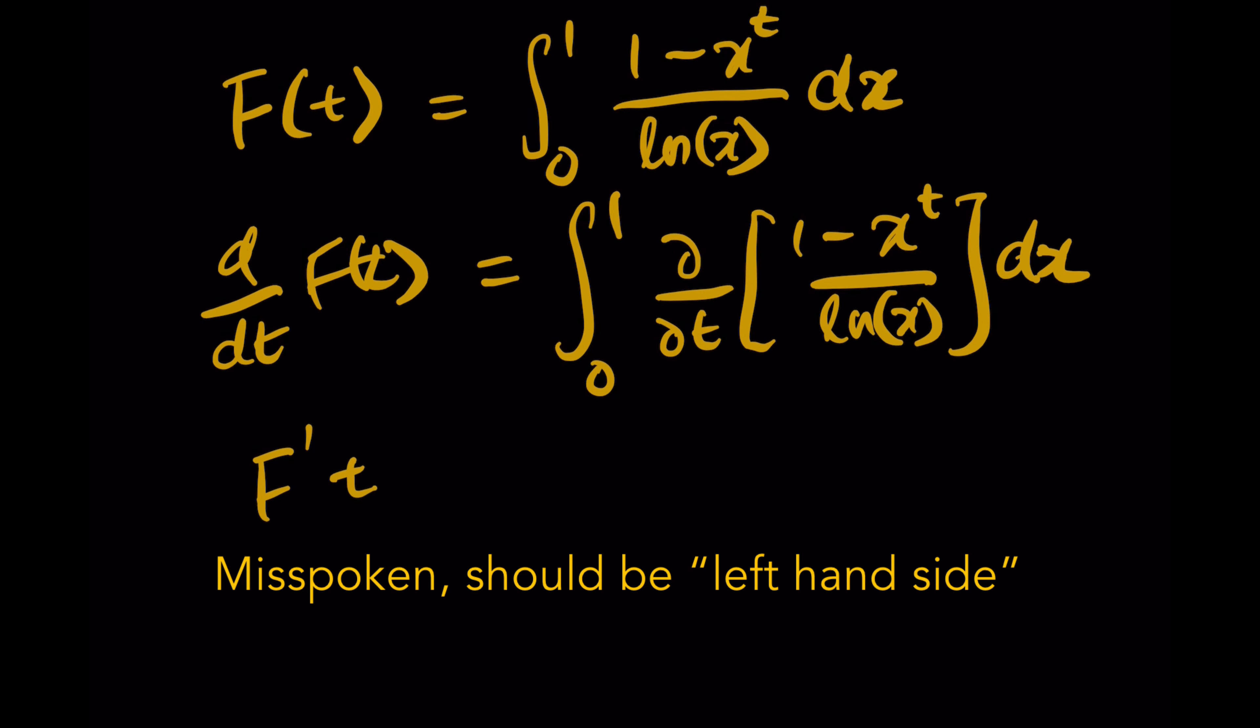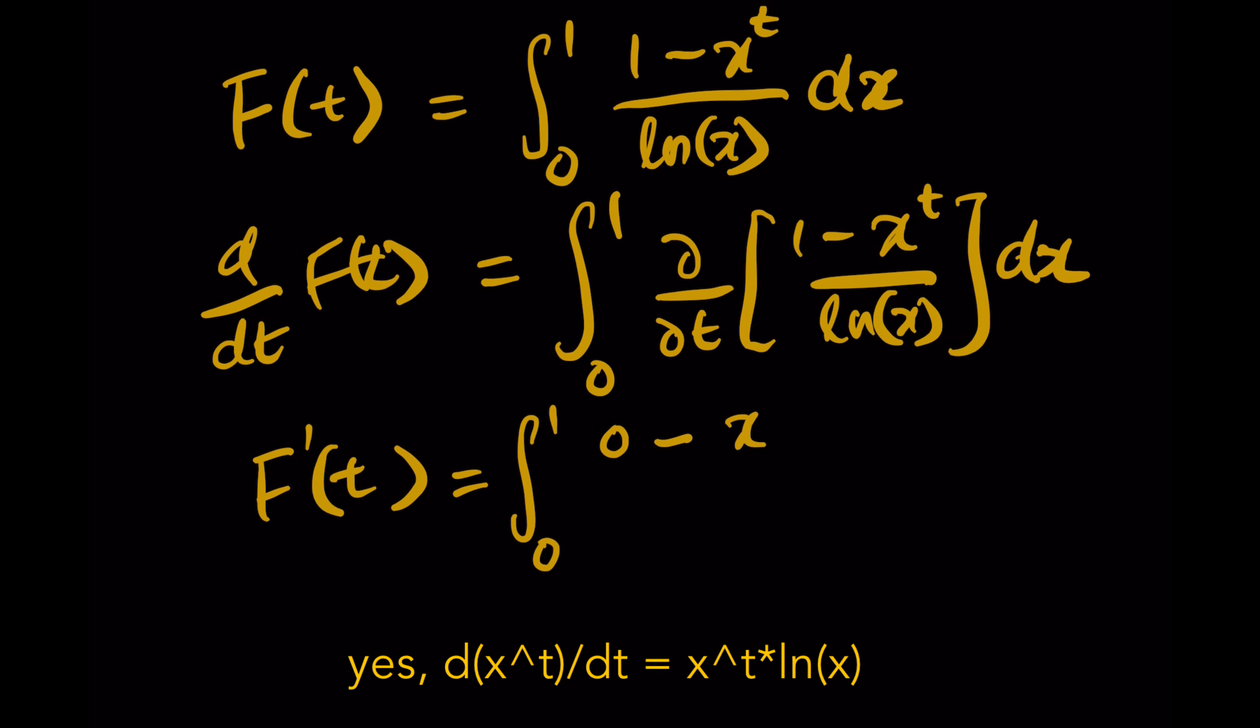While on the right hand side, the integration remains and we're going to differentiate the integrand with respect to t. Differentiate 1 over dt is 0, minus the derivative of x^t over dt will give us x^t ln(x).